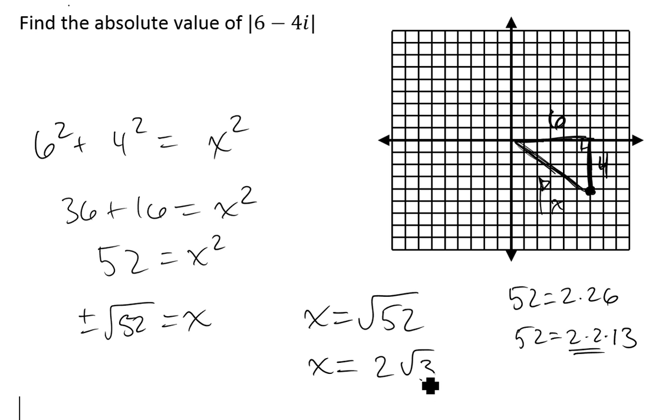So the answer is - what's the absolute value of this number? It is 2 times the square root of 13. Yes, that is a real number. Definitely it's irrational, but it's not a complex or imaginary number. It's purely real. And that's the thing you'll see: the absolute value of a complex number is always going to be a real number.